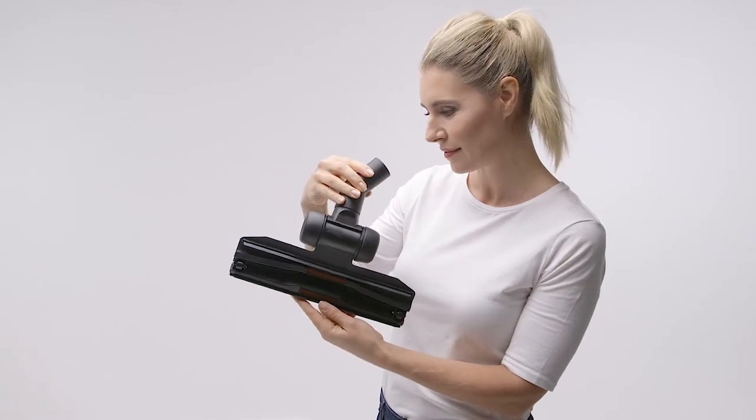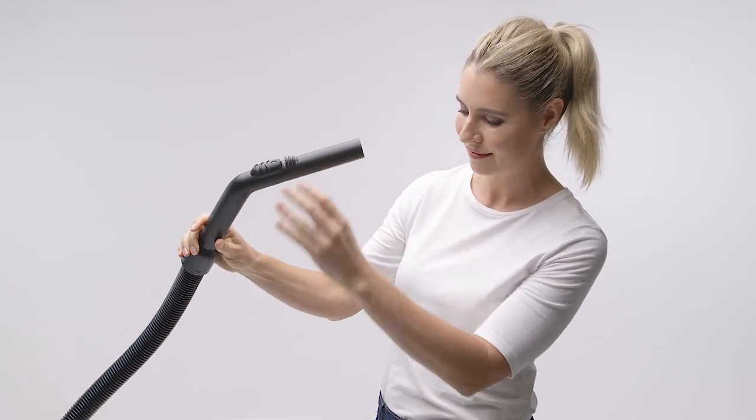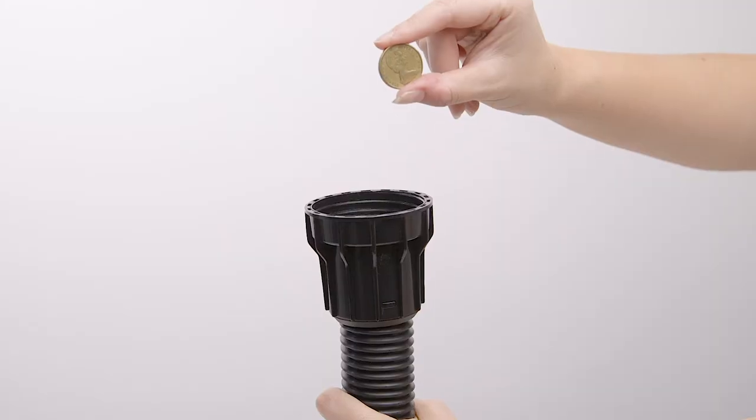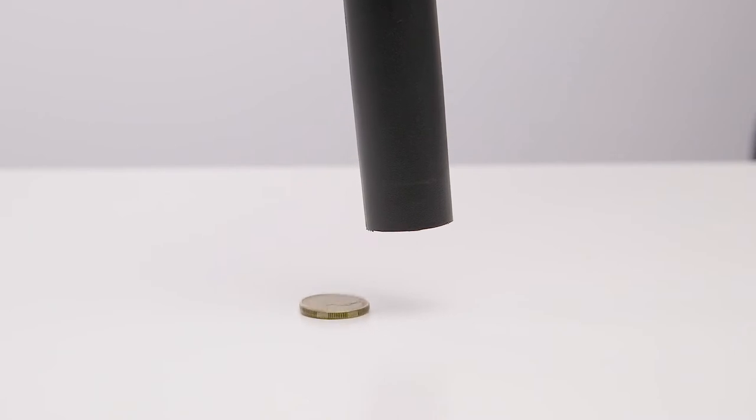Check the floor tool, wand, handpiece, and hose for any obstructions. The best way to check the hose is to drop a coin through one end. If it doesn't fall through, it's likely that you have an obstruction.